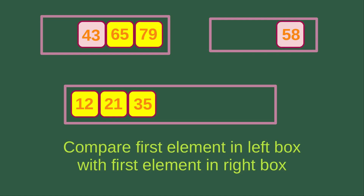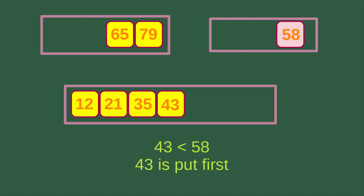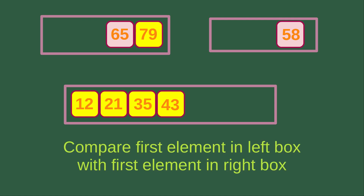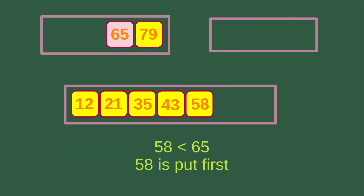Now we compare the first element in the left box, which is 43, with the first element in the right box, which is 58. Since 43 is smaller than 58, we put 43 into the larger merging box. Then we compare 65 with 58: 58 is smaller than 65, so we put 58 into the larger merging box first.